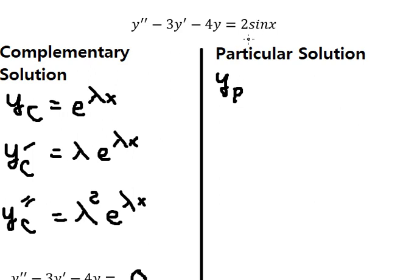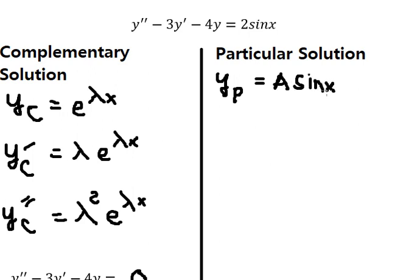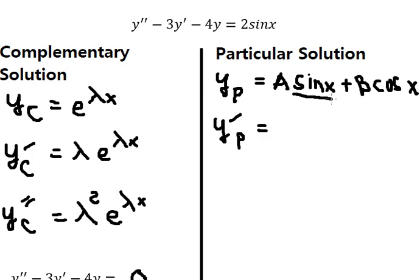Because we have sin x on the right-hand side, I will put yp equals A sin x plus B cos x. Then we do the first derivative of yp. The first derivative of sin x gives cos x.